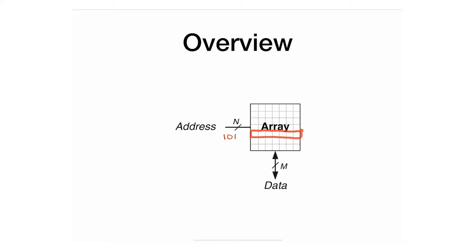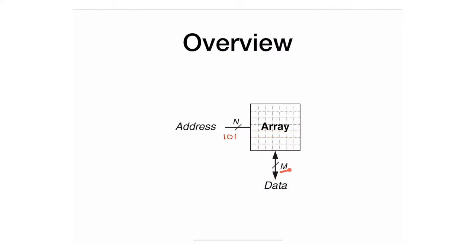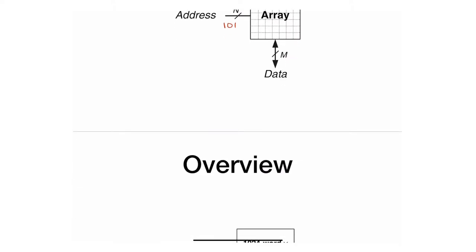Interacting with or accessing that particular row means you can either read from it or write into it. You usually do the read or write through something we call a data port. In this particular case, I have m particular bits, so the output is m bits, meaning I have columns from one all the way to m.